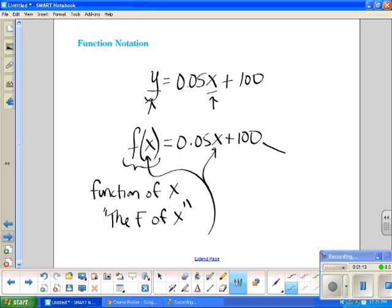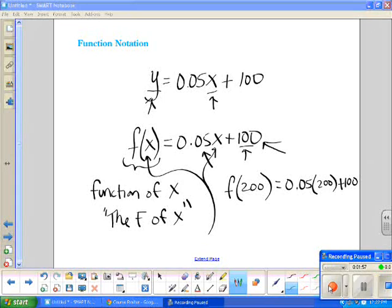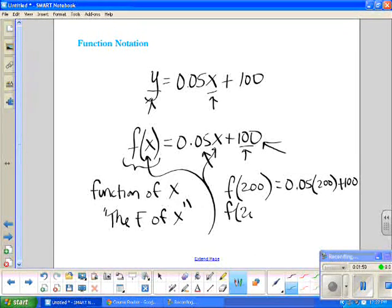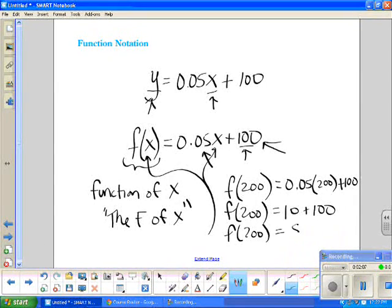I've used the example before of the old-school way to charge for cell phone bills, and this cell phone bill would represent $100 a month plus $0.05 a minute, really expensive. But if someone were going to ask me, how much is my cell phone going to be if I am on the phone for 200 minutes, the way to write that question using function notation would be what is the f of 200? And I would write this out by plugging in 200 anywhere I see x and working it out. 200 times 5 cents is $10. So if I was working this out, this would be $10 plus $100. So the f of 200 is equal to $110.